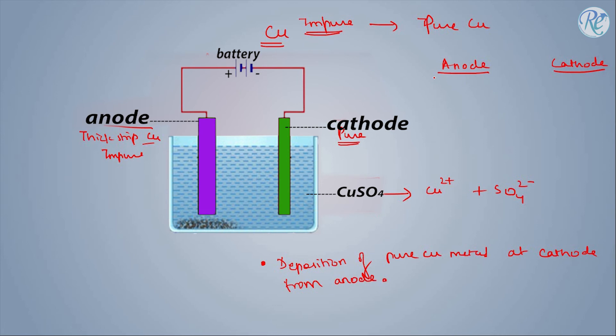At anode, oxidation will take place, and at cathode, reduction will take place. At the anode, the impure copper will get oxidized by loss of one electron to form copper ion.